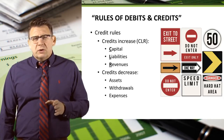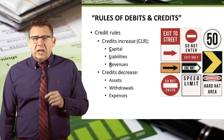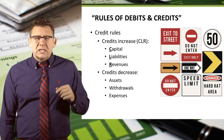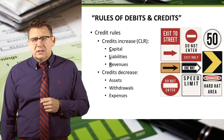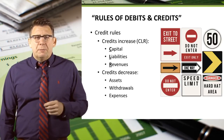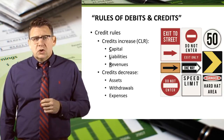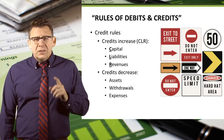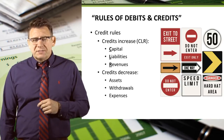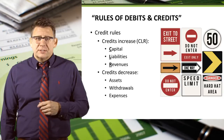The credit rules are as follows: capital, liabilities, and revenues are all increased by credits. I remember this with the acronym CLEAR — credits increase CLEAR. The normal balance of capital, liabilities, and revenues are credit balances.